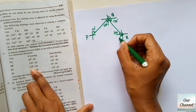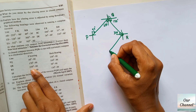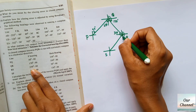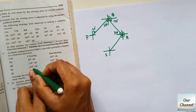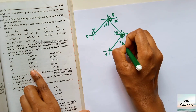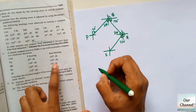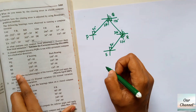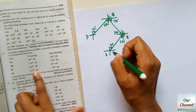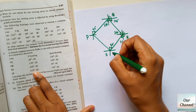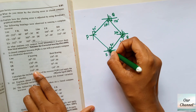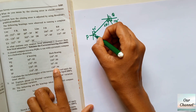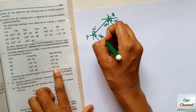The fore bearing of RS is 230 degrees, in the third quadrant, and the back bearing will come in the first quadrant at 50 degrees. Finally, the fore bearing of SP is 310 degrees, which falls in the fourth quadrant, and the back bearing is in the second quadrant at 130 degrees.